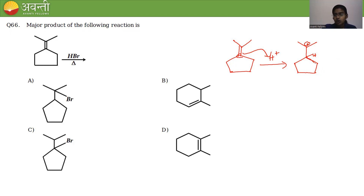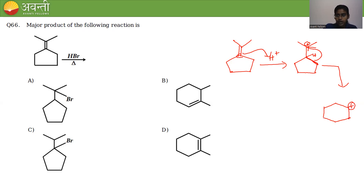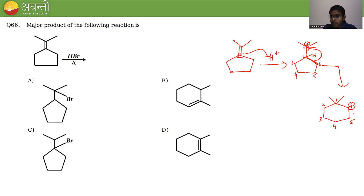After protonation, ring expansion occurs: a bond in the five-membered ring breaks and reforms with the carbocation carbon, giving a six-membered ring. The carbocation is now secondary, located on a CH carbon of the ring.